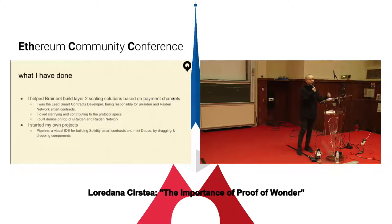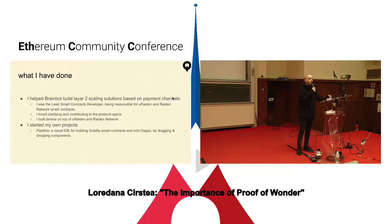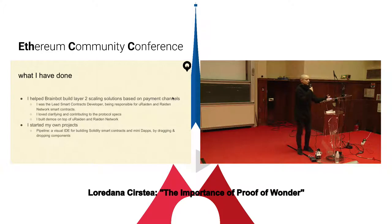I started by helping BrainBot with their micro-Raiden and Raiden network payment channels — unidirectional and bidirectional payment channels — working mostly on the smart contracts. I really liked working on the protocol specs and building demos on them. Then I started my own projects. One of them is Pipeline, and you'll see some demos of Pipeline today. Pipeline started as a visual IDE for building Solidity smart contracts by dragging and dropping, and it evolved to being able to build mini decentralized apps, also by dragging and dropping.